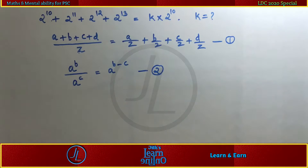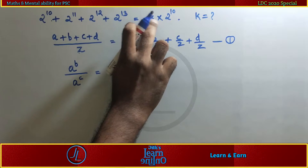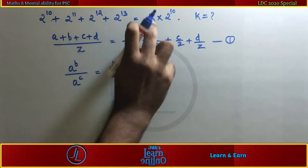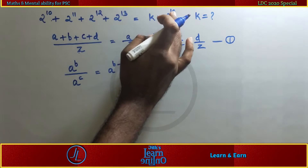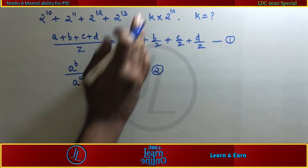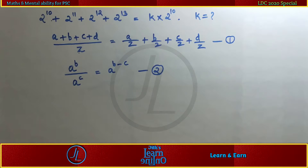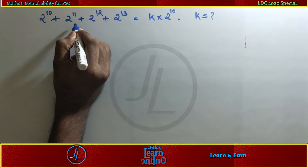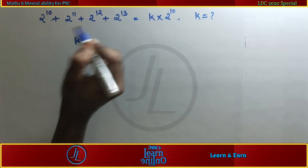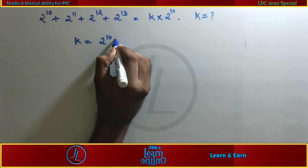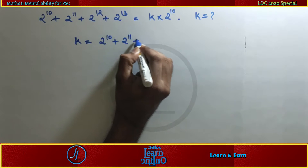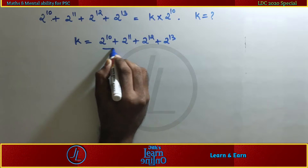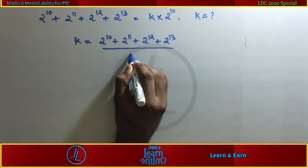The second rule gives us a raised to c. So k equals 2 raised to 10. Taking the expression, we get 2 raised to 10 plus 2 raised to 11 plus 2 raised to 12 plus 2 raised to 13, all divided by 2 raised to 10.